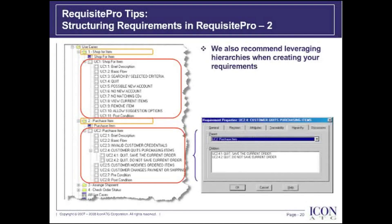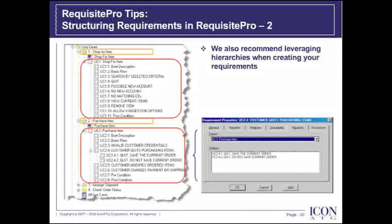In the Shop For Item package, I created a parent requirement, UC1 Shop For Item. UC1.1 Brief Description through UC1.11 Post Condition are child requirements of the UC1 Shop For Item.